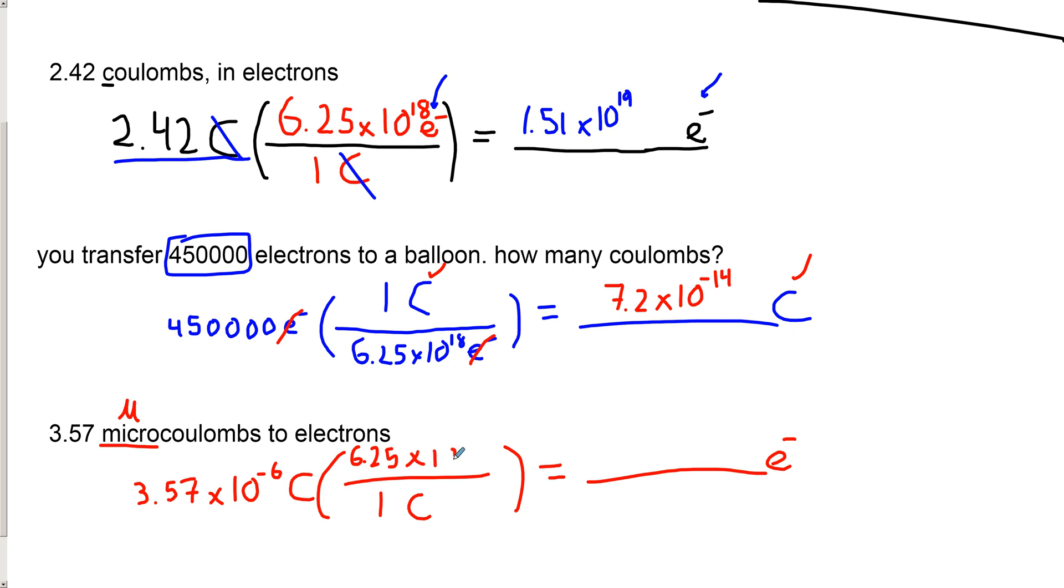And we do the math. So 3.57 times 10 to the minus 6 multiplied by 6.25 times 10 to the 18.